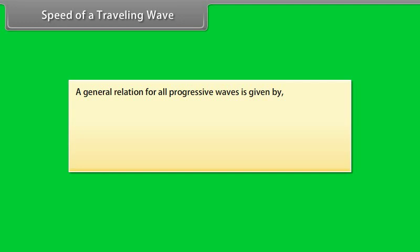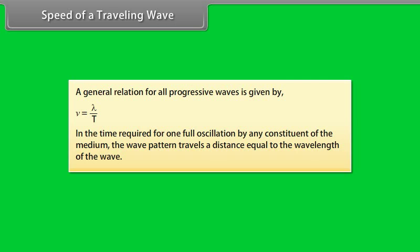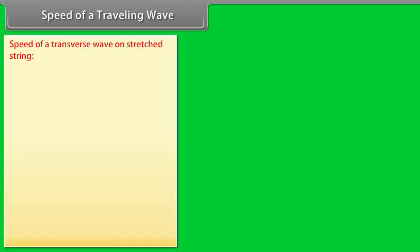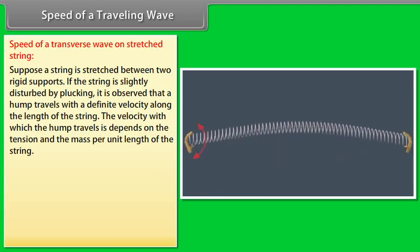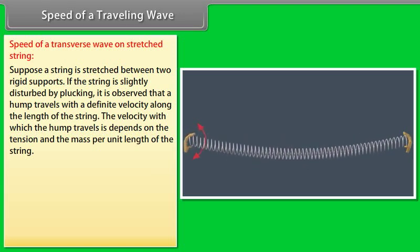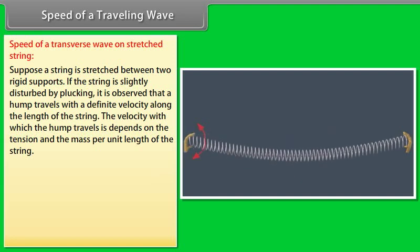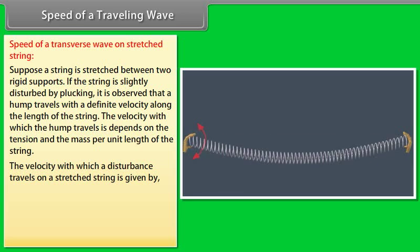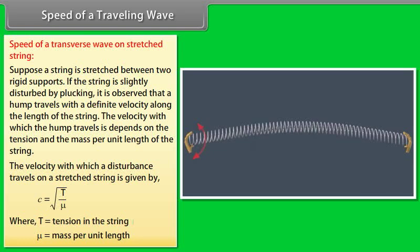Speed of a travelling wave: A general relation for all progressive waves is given by v = λ/T. In the time required for one full oscillation by any constituent of the medium, the wave pattern travels a distance equal to the wavelength of the wave. Speed of a transverse wave on a stretched string: If a string is slightly disturbed by plucking, a hump travels with a definite velocity along the length of the string. The velocity with which a disturbance travels on a stretched string is given by c = √(T/μ), where T is the tension in the string and μ is the mass per unit length.